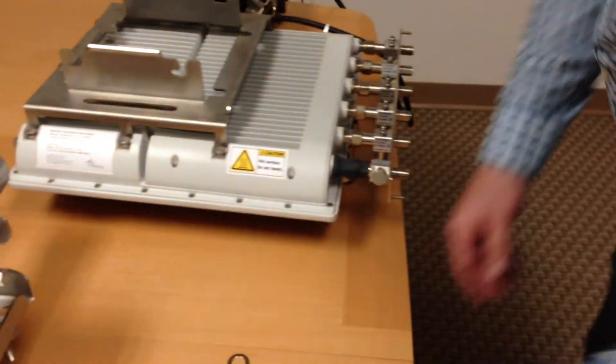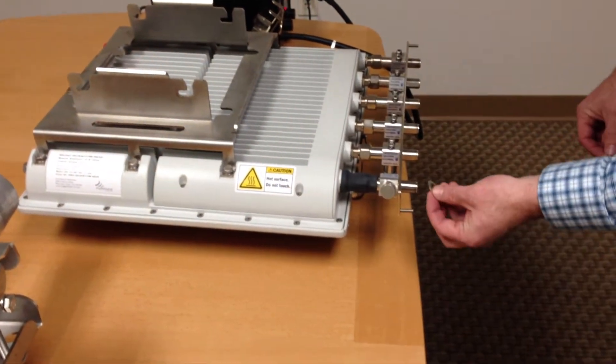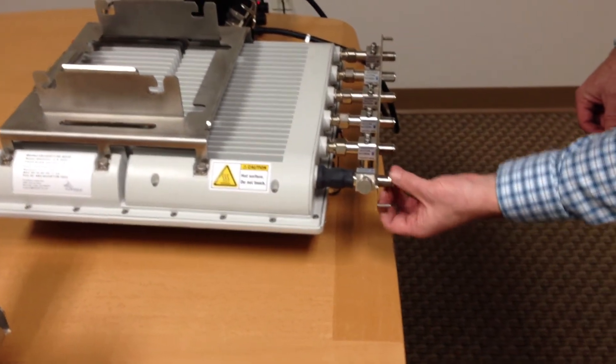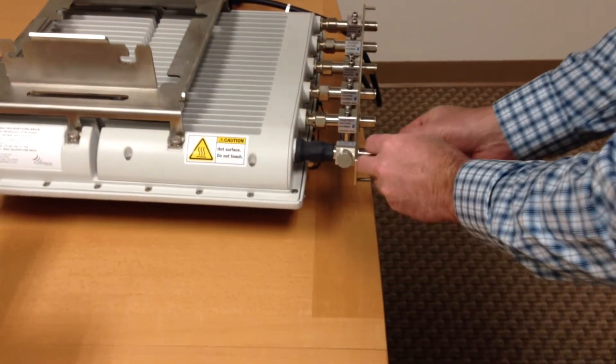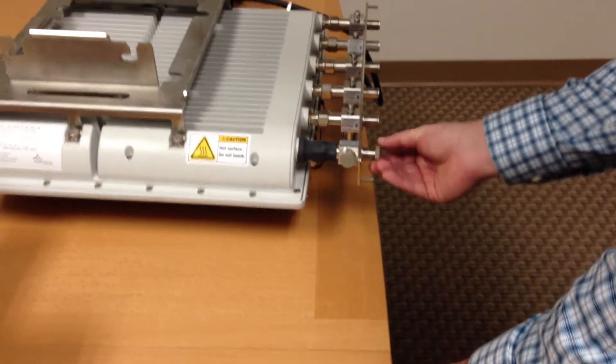And we'll take our washers and our ground nuts here and just work them one by one, securing the ground plate to the RF arrestor.